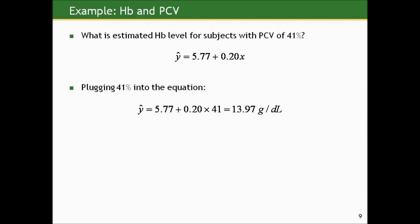What is the interpretation of the intercept of 5.77? Technically it would be the estimated hemoglobin level for persons with a packed cell volume of 0%, which can't happen in real life. Our data range is 25% to 55%, so this is not a scientifically useful number, but it is necessary for us to fully specify the equation.